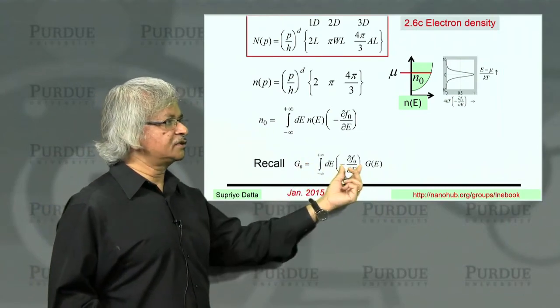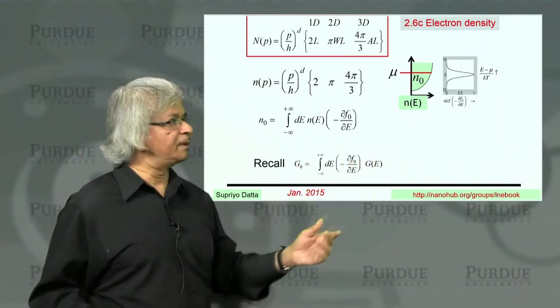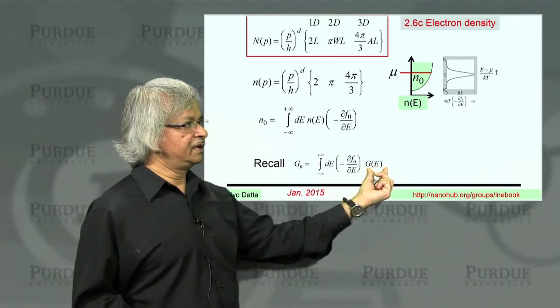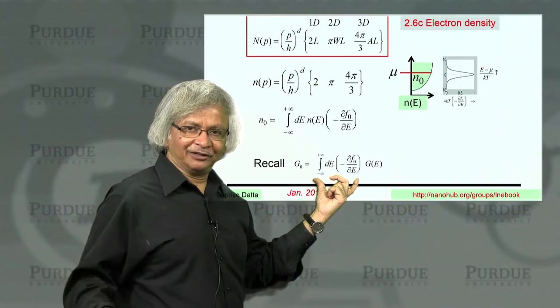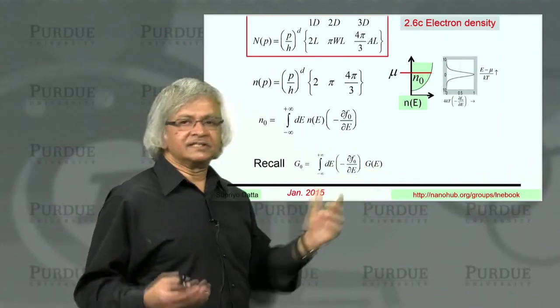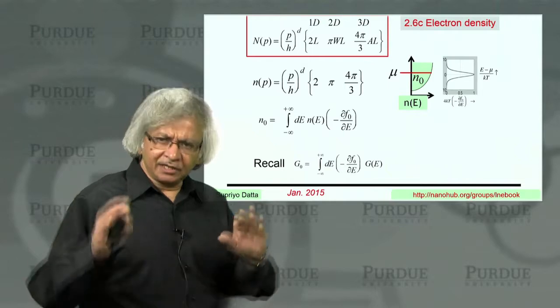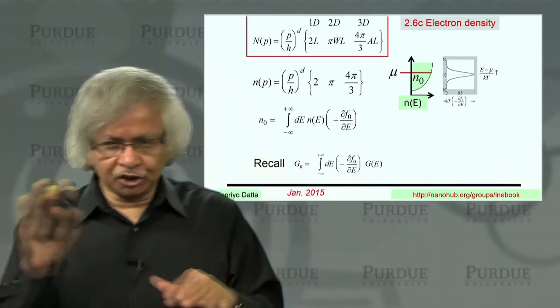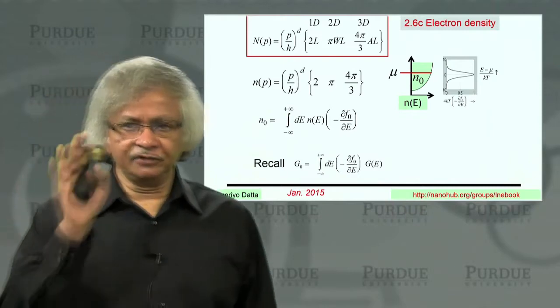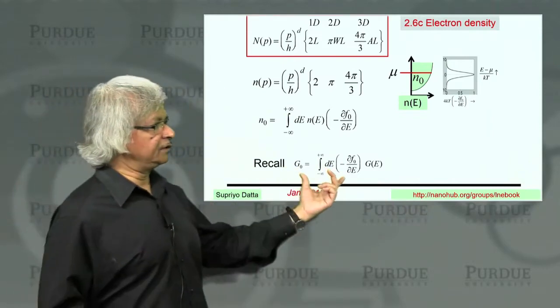So conductance also involves this average. And usually we have been talking about this function. And usually I have not been carrying around this integral everywhere. But G of E is like the conductance at a given energy. And it's understood that any time you want actual values, you should multiply by dF dE and average, like we told here.